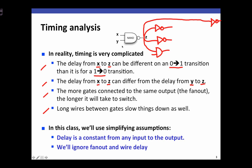So computing propagation delay in the general case is relatively complicated. But for the purpose of this class, we can consider propagation delay to be a much simpler thing, and we're going to make two simplifying assumptions. First, for a given gate, the delay is constant from any input to the output. And second, we're going to ignore fanout and wire delay.